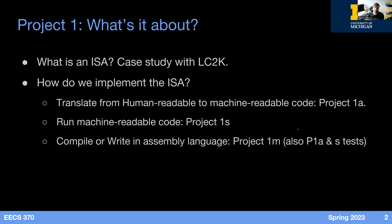The first part, Project 1A, will be an assembler — that's why we call it project 1A. In the assembler, we will translate from human-readable assembly code to machine-readable machine code, which is just ones and zeros, binary. Then we'll take those machine code programs and run them through a simulator. The simulator will simulate registers, the PC, and the main components of a CPU — the most basic type of CPU that could run the LC2K ISA. Finally, in Project 1M, we'll be writing some code in assembly language. M is for multiplication, because that's the program we'll be writing.